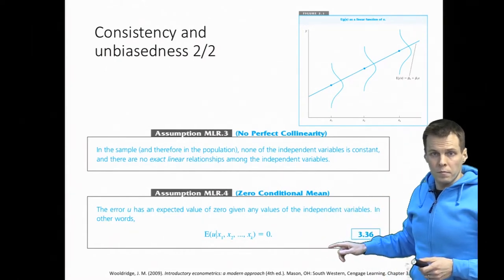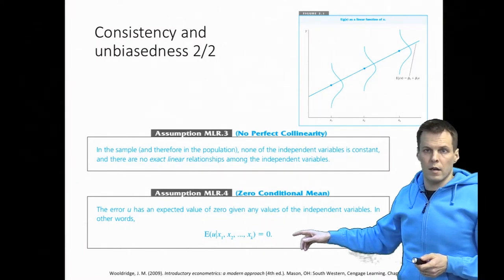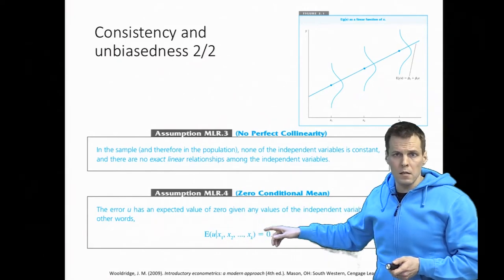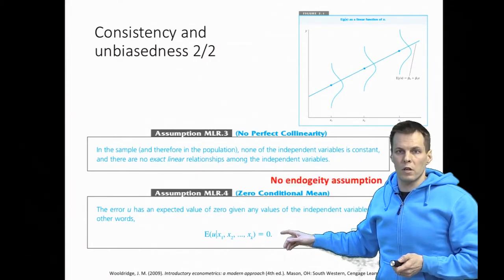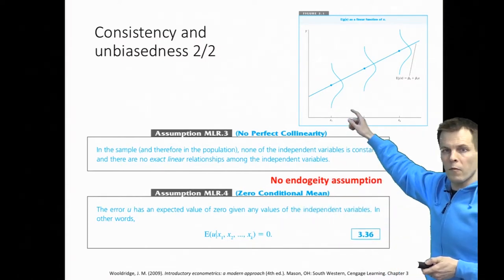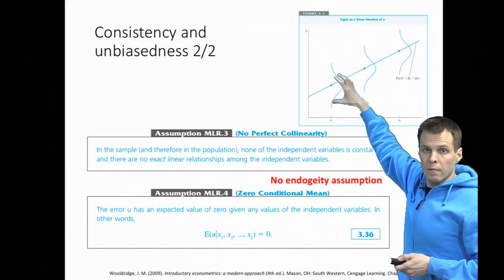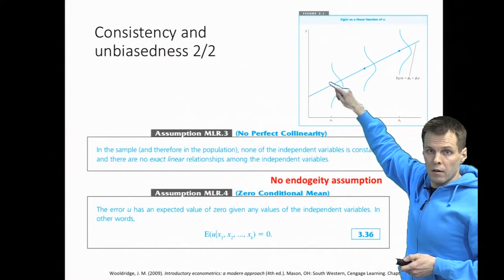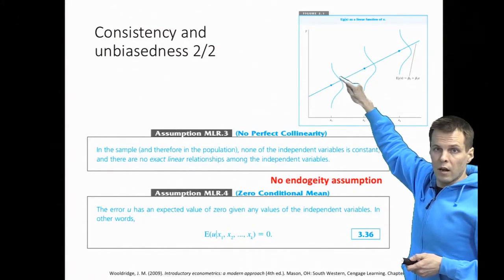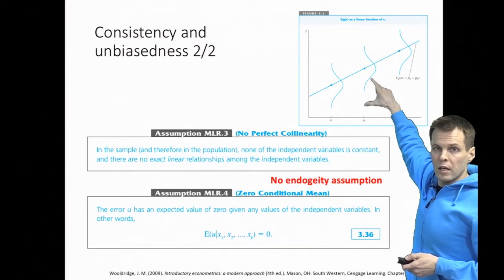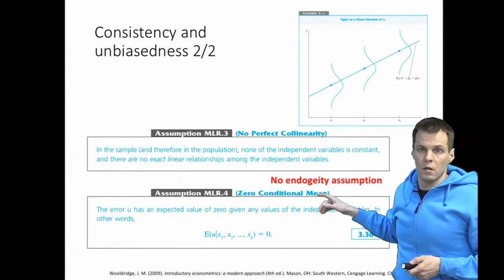Assumption four is the zero conditional mean — a technical way of expressing that we assume the error term is uncorrelated with all explanatory variables. This is also referred to as the no endogeneity assumption. Looking at the regression diagram, this assumption means that where the distribution is located doesn't depend on the regression line — the distribution is always centered exactly at the regression line. Endogeneity is a big issue when making causal claims using observational data.